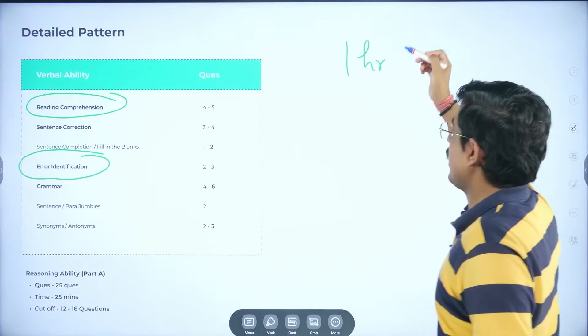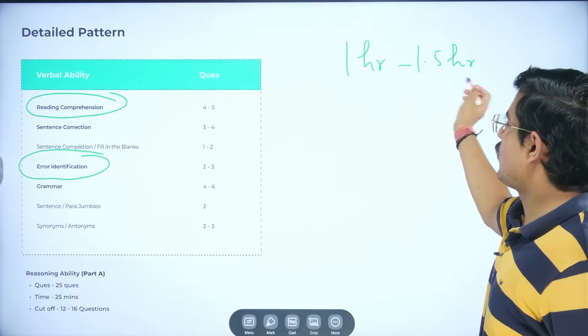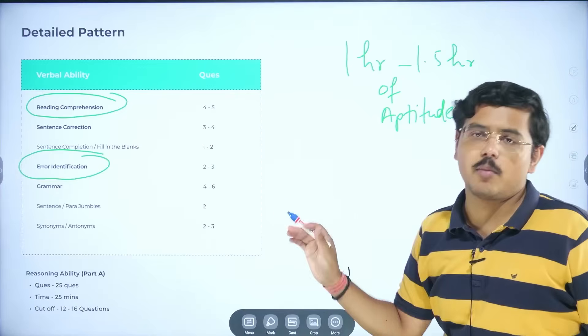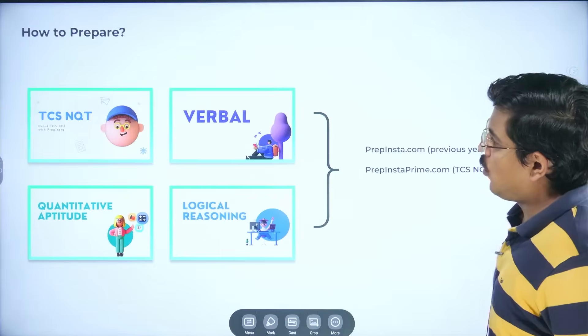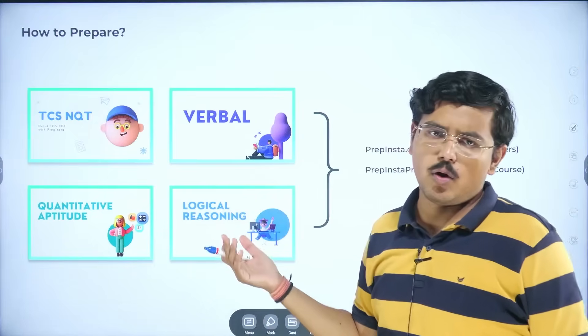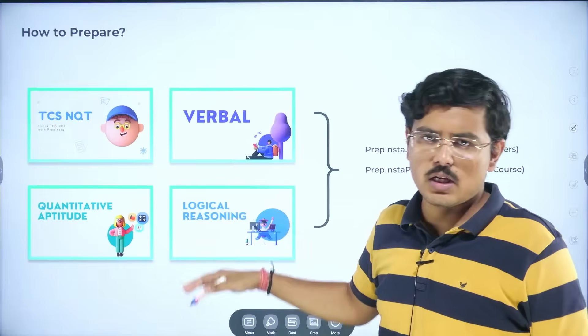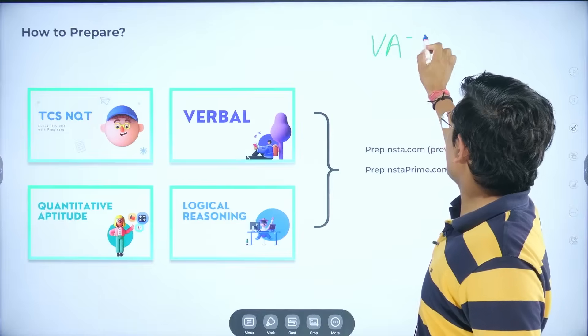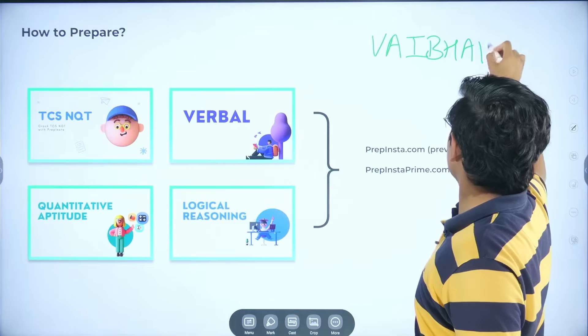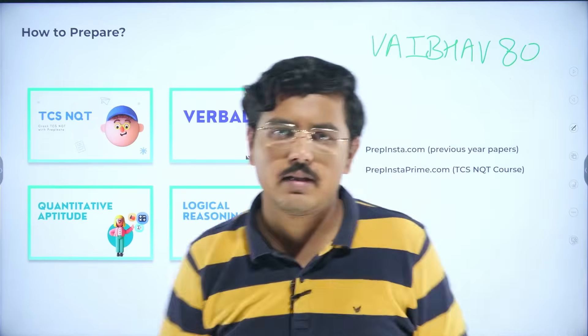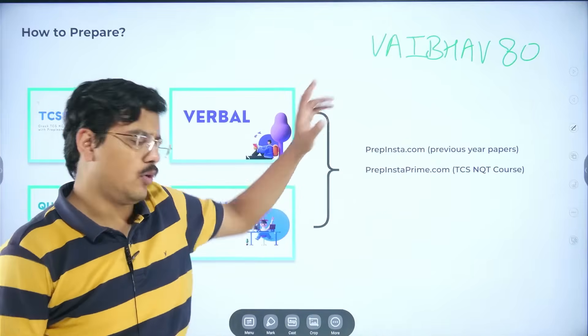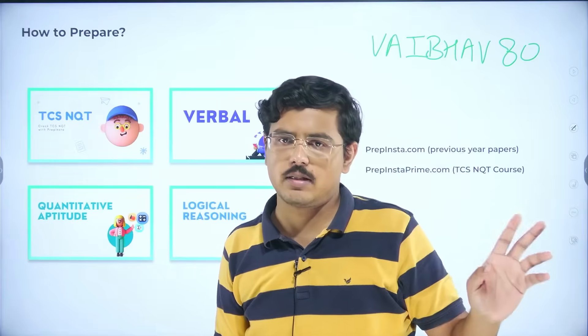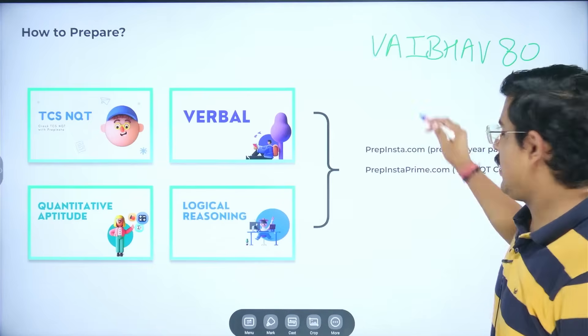Daily one hour of aptitude. If you can devote 1.5 hour, so 1 to 1.5 hour of aptitude practice which involves quants, logical as well as verbal would help you prepare better. If you go ahead, you can also try out prepinstaprime.com where you have complete structured courses. And for that, I'm giving you the coupon code. Nowadays, there is a sale going on where you get 80% as a discount and this coupon would be active for limited time only. Most probably by Sunday evening or by Monday morning, this would cease to exist.